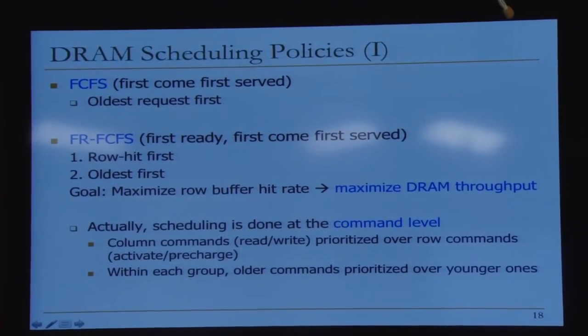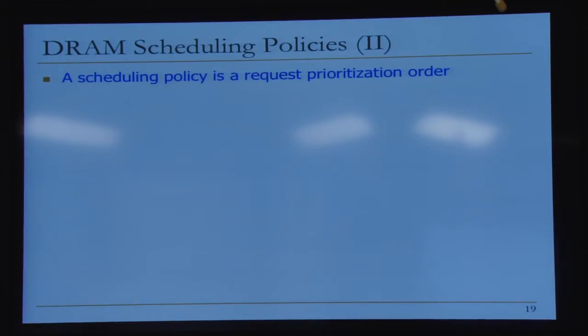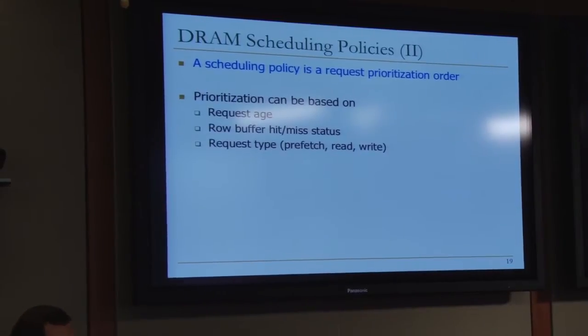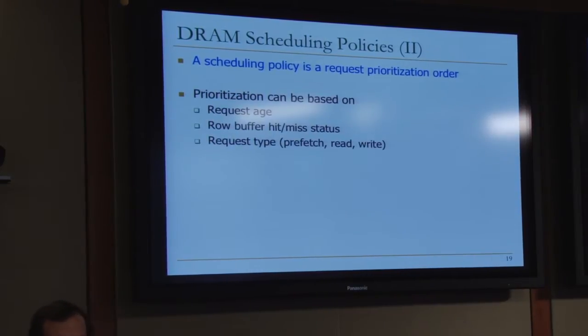Scheduling is actually done at the command level — column commands like read and write are prioritized over row commands like activate and precharge. Within each group, older commands are prioritized over younger ones. So what is the DRAM scheduling policy? It's really a prioritization order. This can be based on many things: the age of the request, the row buffer hit status, request type — whether it's a prefetch, read, or write. For prefetches, it's actually not clear how to prioritize, because there are useful prefetches. If you have a potentially useful prefetch that hits in the row buffer and there's a demand request that misses, which one do you prioritize?